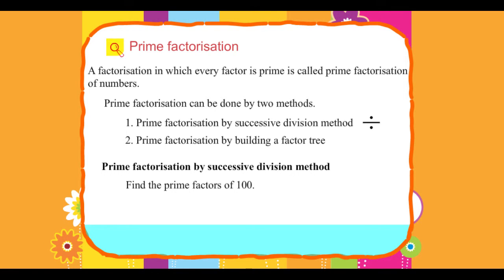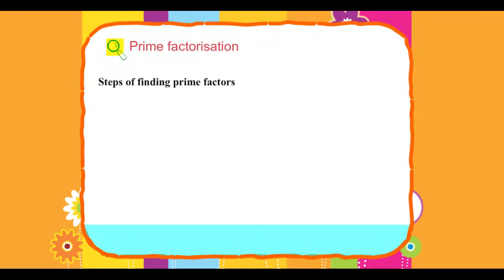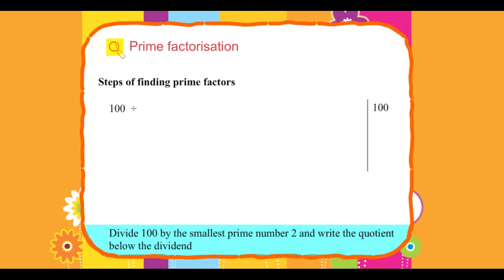Find the prime factors of 100. Steps of finding prime factors. Divide 100 by the smallest prime number 2 and write the quotient below the dividend.